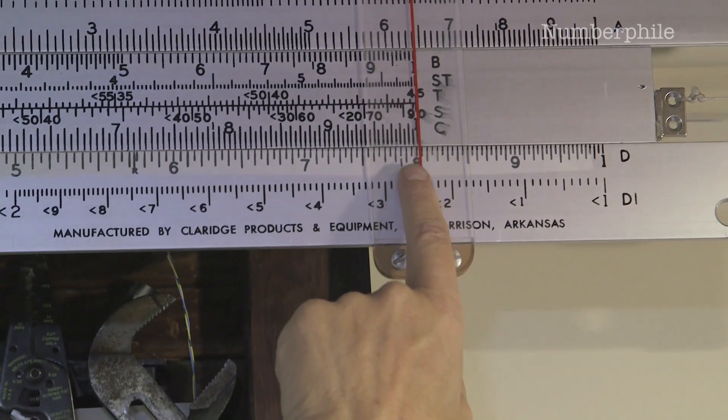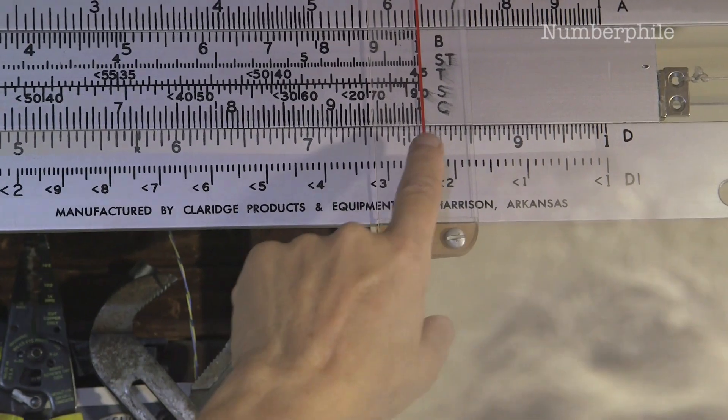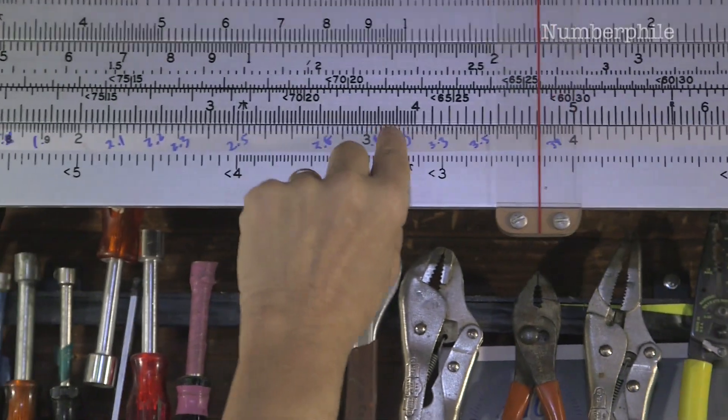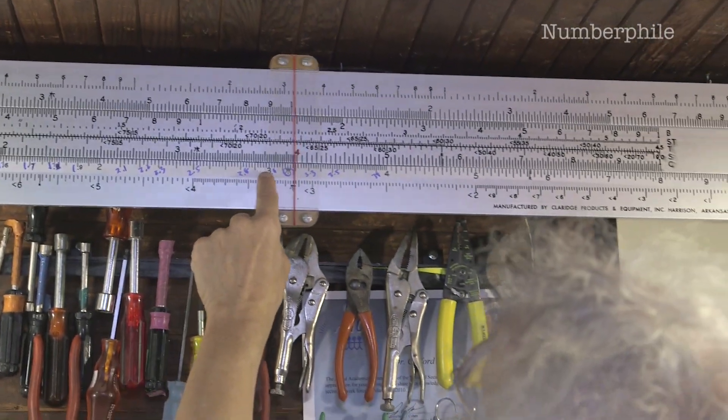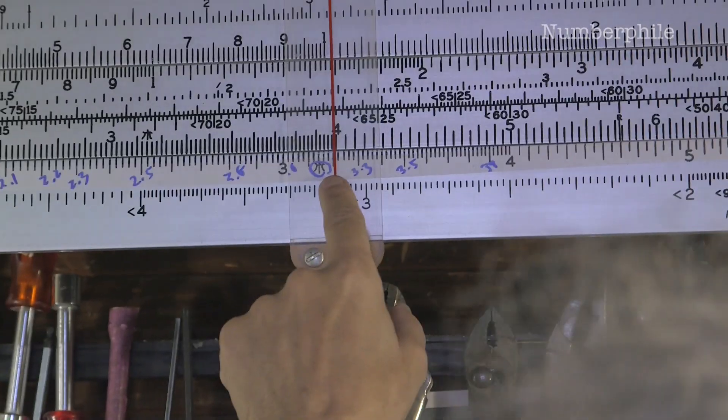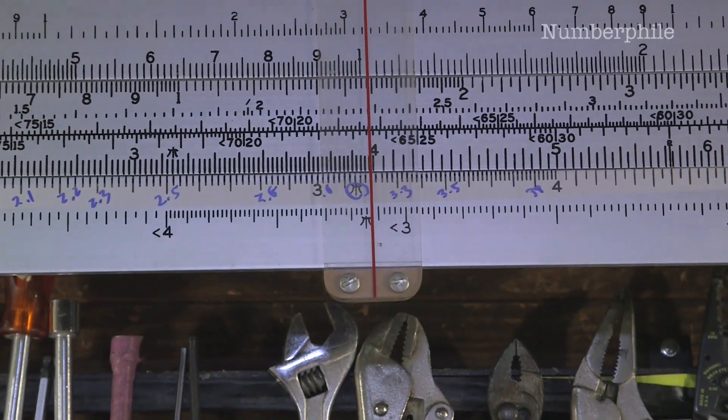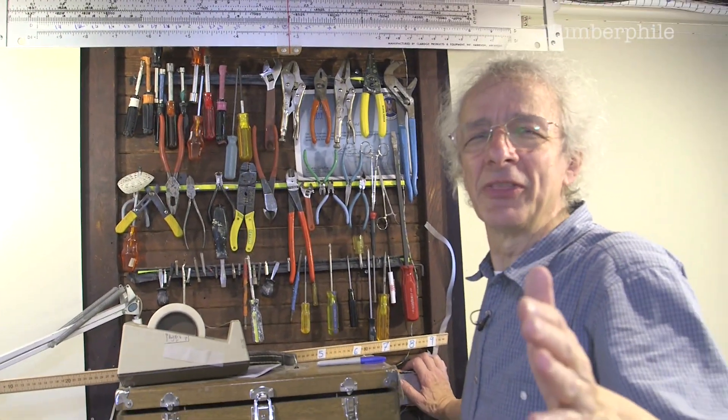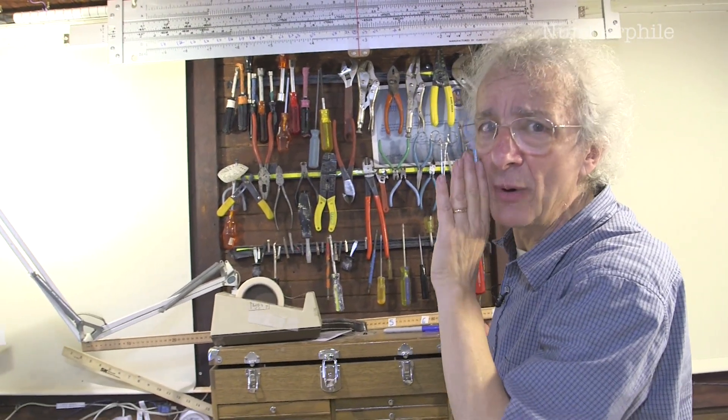Let's multiply 8 times 4. 8 times 4 is a little bit more. It looks like 32. It's either 3.2 or 32. The decimal place, I don't care about. I'm just concerned with the numbers. Slide rules don't know about decimal places.